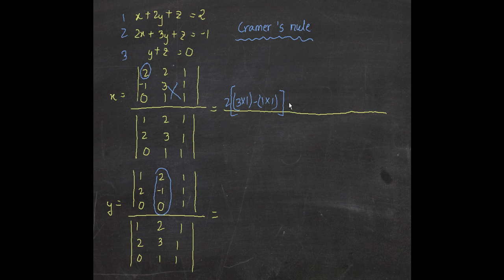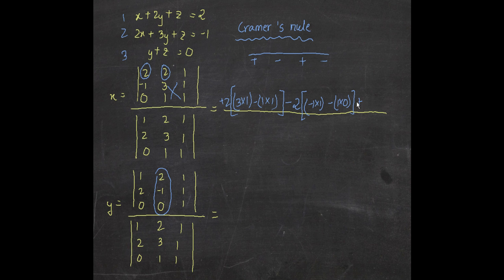Another important difference: when expanding, we alternate signs — the first term is plus, the second is minus, the third is plus, and so on. So the second term becomes minus two. Then: minus one into one minus one into zero — not the other way around. Then plus one, and we multiply: minus one into one minus three into zero.